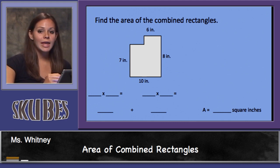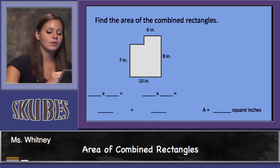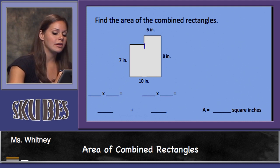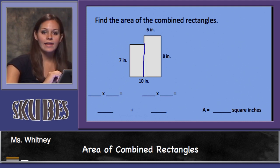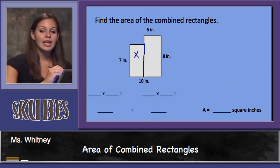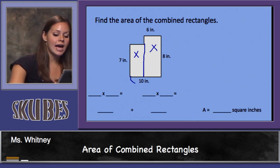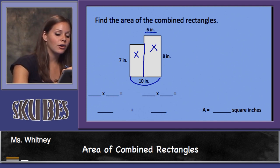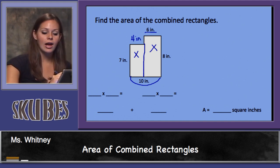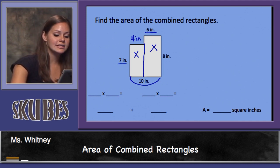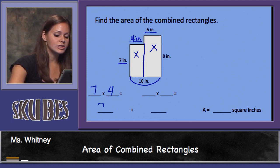Here's another example where we have to make the shape into two separate rectangles. We'll divide the shape here and find the area of the first rectangle and add it to the area of the second rectangle. This entire side is 10 inches; we can see that this portion is 6 inches, so we know that this section is 4 inches, which totals 10 inches across.